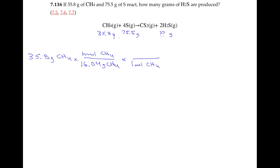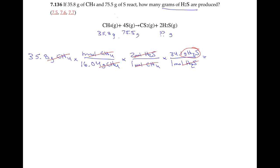One mole of methane produces two moles of H₂S. We want to know how many grams of H₂S are produced, so I calculated the molar mass of H₂S: for every one mole of H₂S, we have 34.1 grams of H₂S. Using dimensional analysis, grams of methane cancel, moles of methane cancel, moles of hydrogen sulfide cancel, and I'm left with grams of hydrogen sulfide — 152 grams of H₂S.